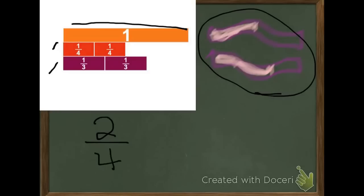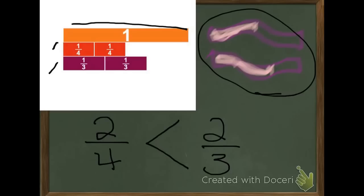Remember, just by comparing my 2 fourths and my 2 thirds, I see that the numerators are the same, so I have to look at the denominators. And just by looking at my fraction strips, I can figure out pretty quickly that 2 fourths is less than 2 thirds. Remember that when two fractions have the same numerator, the fraction with the greater denominator is less than the other fraction. Because the smaller the denominator, the less pieces you have to share. The bigger the denominator, the more you have to share, so the smaller the pieces get. That's how we compare fractions with the same numerator. Now it's time to do the guided practice with your teacher.